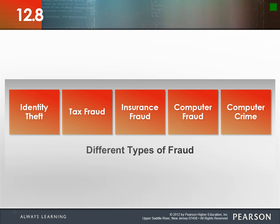Tax fraud can manifest in many ways. The most prevalent is tax evasion — hiding assets, using Swiss bank accounts to avoid paying taxes. Al Capone couldn't be convicted of his major crimes, but was convicted of tax evasion. Other forms include lying on tax forms, misrepresenting property costs, or underreporting tips if self-employed.